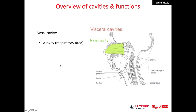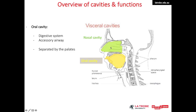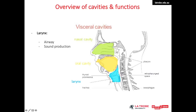Let's have a quick overview of the cavities and their functions before we go into more detail. Most superiorly, we have the nasal cavity, which is our main airway for breathing. Directly inferior to the nasal cavity, we have the oral cavity, which is the starting point of the digestive system and also works as an accessory airway. The nasal and oral cavity is separated by the hard and soft palate. Inferior to the oral cavity there is the larynx, which allows us to make voiced and voiceless sound and houses our vocal folds.